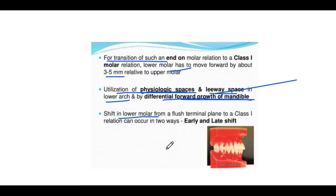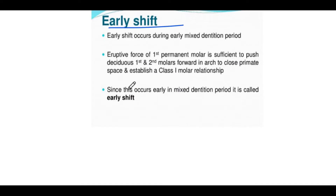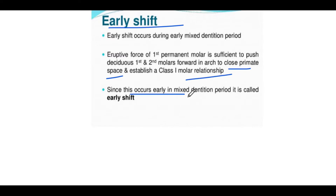Shift in lower molar from a flush terminal plane to a Class 1 relation can occur in two ways: early shift and late shift. In early shift, the permanent molar exerts eruptive forces on the deciduous first and second molars. Once those forces are applied, these teeth move forward closing the primate space and establish a Class 1 molar relationship. Since this occurs early in the mixed period, it is called early shift.